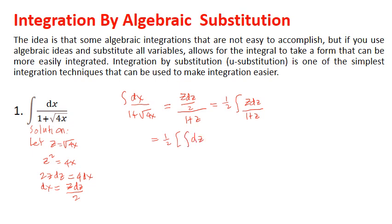Simplifying: this equals one half times the integral of dg minus the integral of g dg over (1 plus g). Simplifying further gives one half times (g minus ln|1 plus g|) plus C.